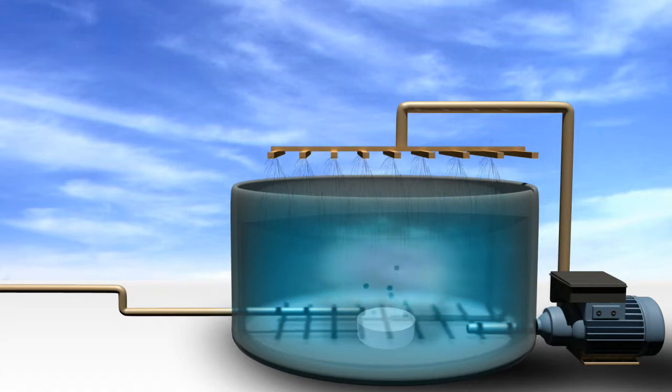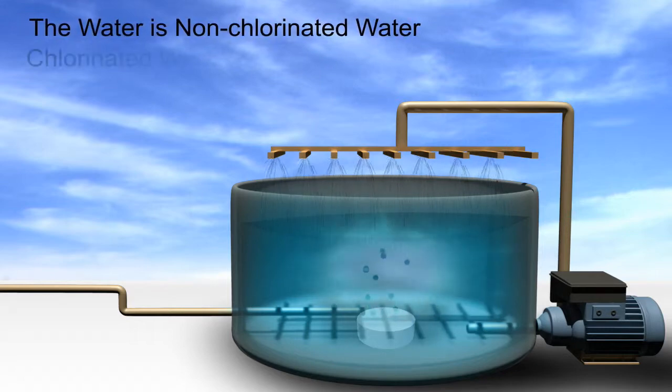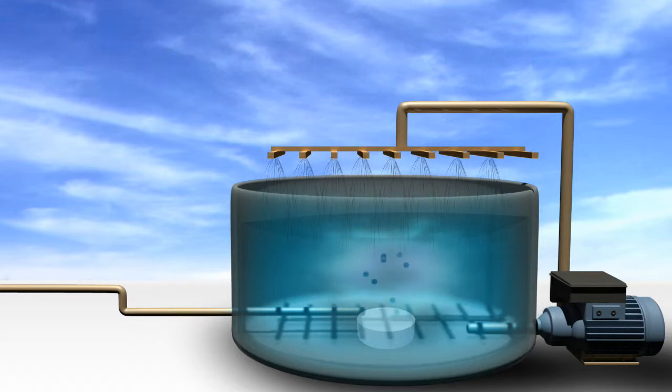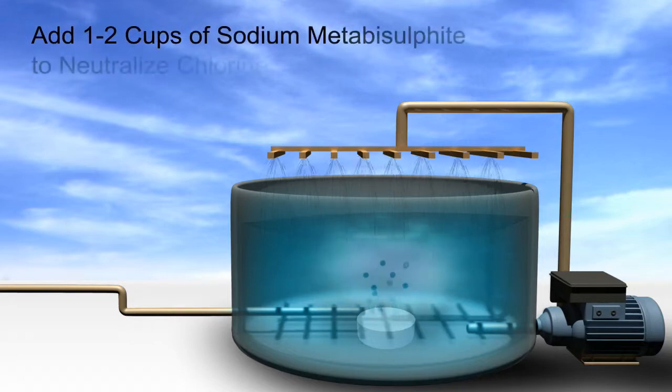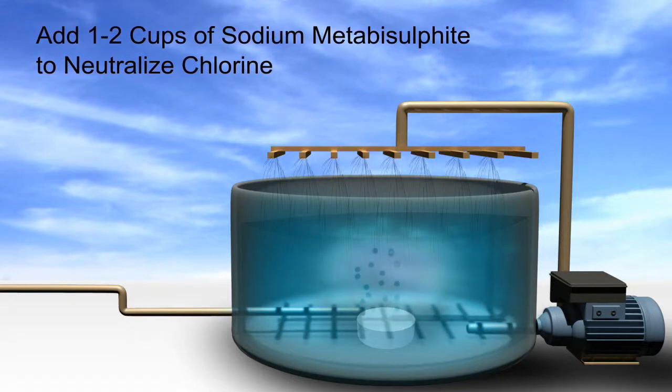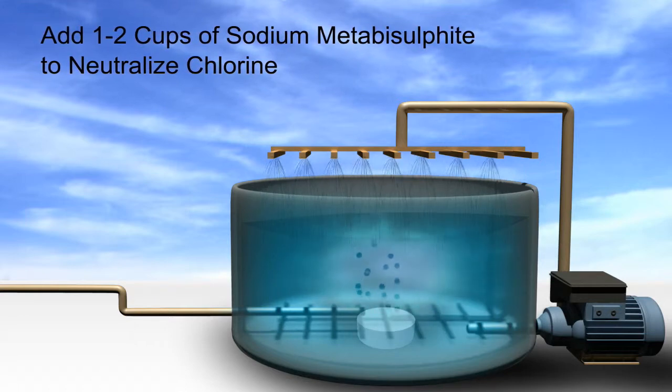The key to this recirculation is that the water is non-chlorinated water. If there is some chlorine in the water, it will kill the bacteria. However, this is not a stopper if we add a small amount, 1 cup to 2 cups, of sodium metabisulfite, which will neutralize the active chlorine and allow this water to be utilized for the grow-up process.